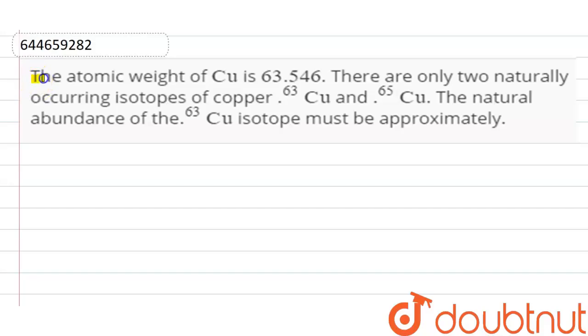Our question is, the atomic weight of copper is 63.546. There are only two naturally occurring isotopes of copper, that is copper-63 and copper-65. The natural abundance of the copper-63 isotope must be approximately.